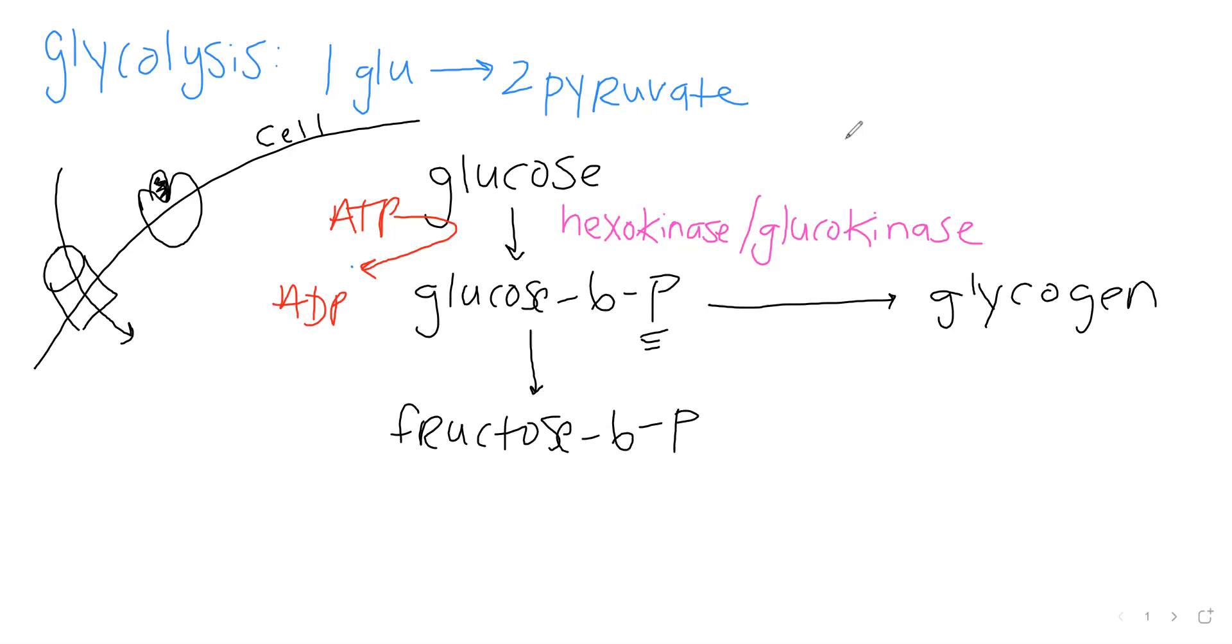And from fructose-6-phosphate, we're then going to add another phosphate group and it's going to become fructose-1,6-bis-phosphate. And as well as in order to get that phosphate group, we're going to have to use another molecule of ATP to transform and transfer the phosphate group, so ADP. Okay, so we had to use up two molecules of energy here.